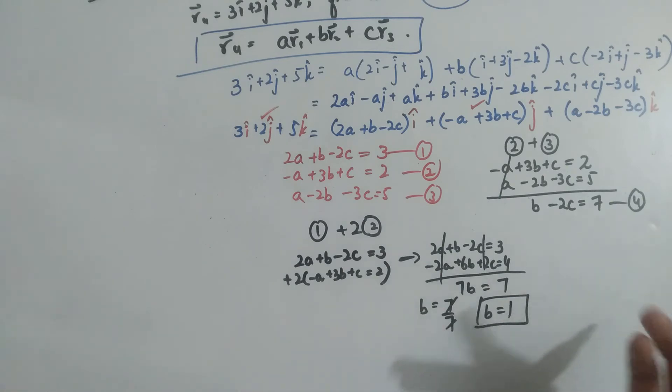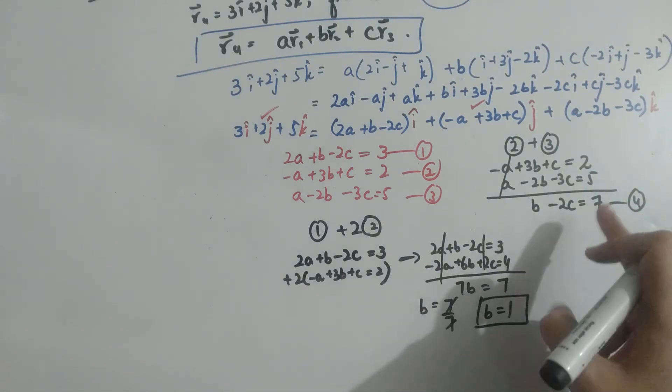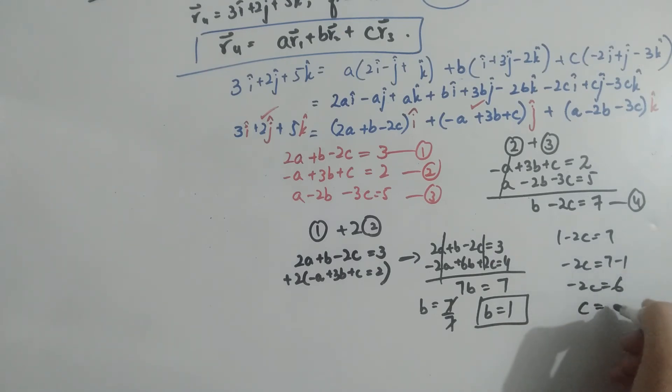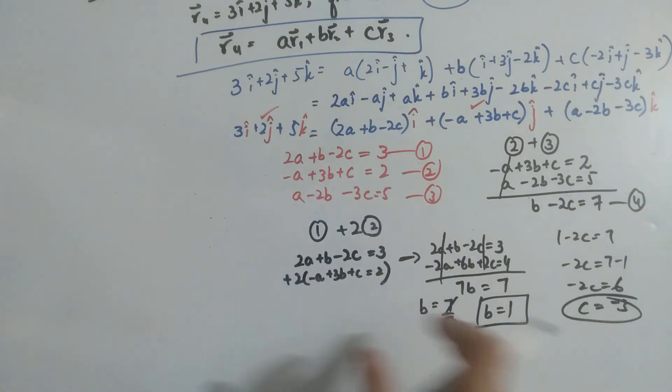Putting the value of B in equation 4, we get 1 minus 2C equals 7, or minus 2C equals 6, or C equals minus 3. This is the value of C. And now put this value in equation number 1 and you will get the value of A.